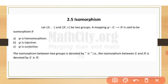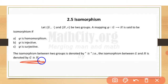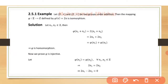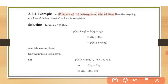The isomorphism between two groups is denoted by G isomorphic to H. Let's look at an example. We have a mapping between positive integers Z (0, 1, 2, 3, …) and positive even integers E (2, 4, 6, …). The mapping phi from Z to E is defined by phi(n) = 2n.